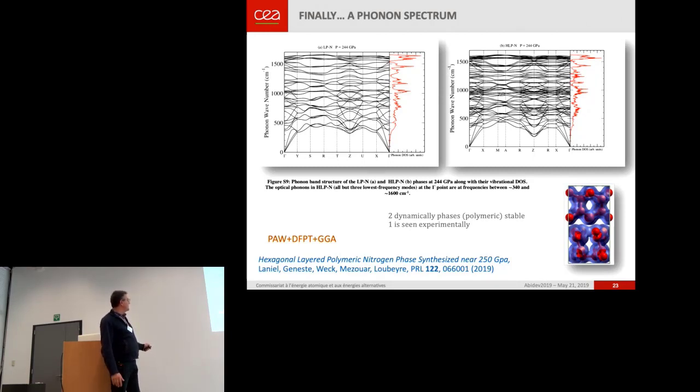And you have computed the corresponding graphs, and these are two stable phases you find. And which one? It's the experimental one. One. This one has been found by the experimentalists. And you see the two phases are, at least in GGA, dynamically stable because there are no negative modes.